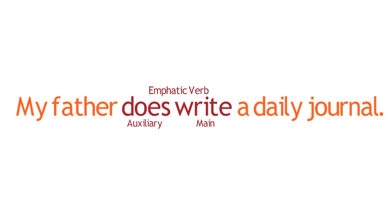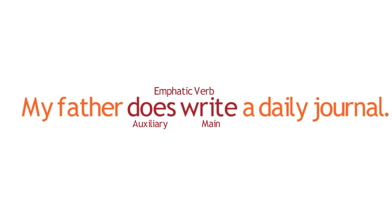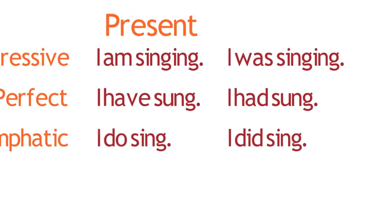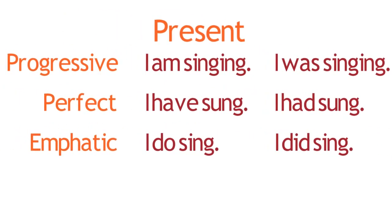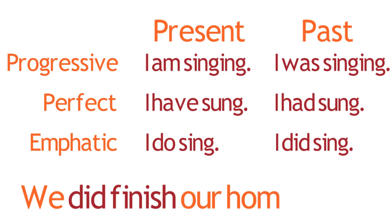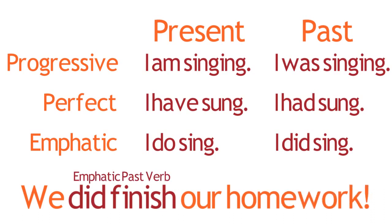Additionally, as with the other verb forms you've worked with, the emphatic verb form also includes a past form. For example, in this sentence, the verb 'did finish' provides emphasis that the subject, we, performed the stated action. Here, this emphasis is reinforced with the exclamation point, which changes this sentence from a statement to an exclamation.